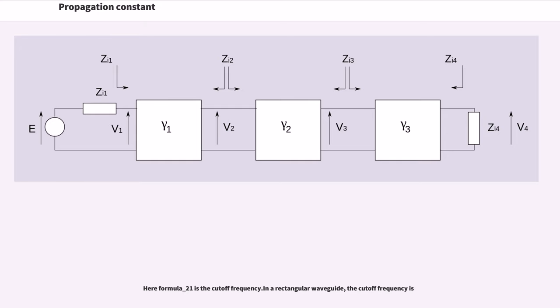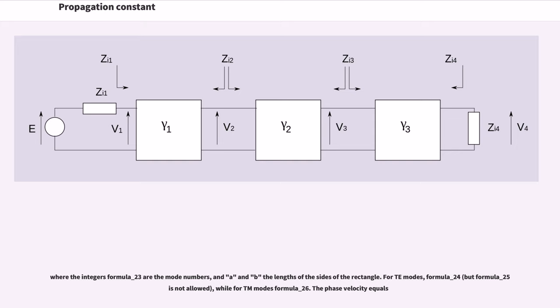Here f_c is the cutoff frequency. In a rectangular waveguide, the cutoff frequency is f_c = (c/2)*sqrt((m/A)^2 + (n/B)^2), where the integers m and n are the mode numbers and A and B the lengths of the sides of the rectangle. For TE modes, m,n = 0,1,2... while for TM modes m,n = 1,2,3... The phase velocity equals v_p = c/sqrt(1-(f_c/f)^2).